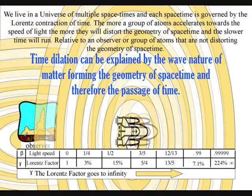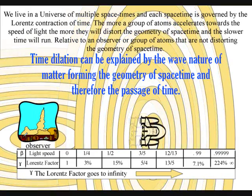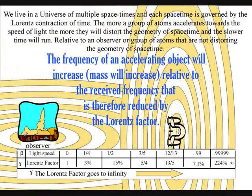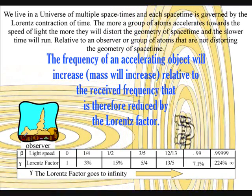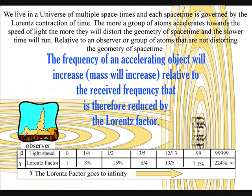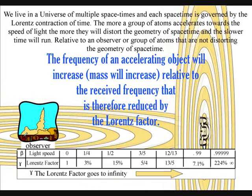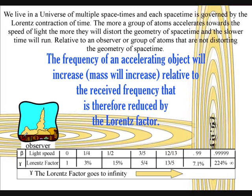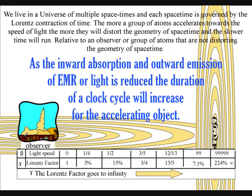We have time dilation for an object accelerating towards the speed of light, and gravitational time dilation around objects of great mass, because the greater the momentum, the shorter the wavelength, and the higher the frequency. The frequency of an accelerating object will increase relative to the received frequency and is therefore reduced by the Lorentz factor.